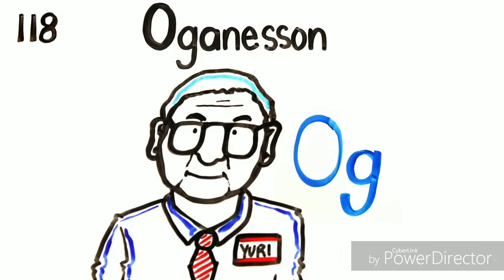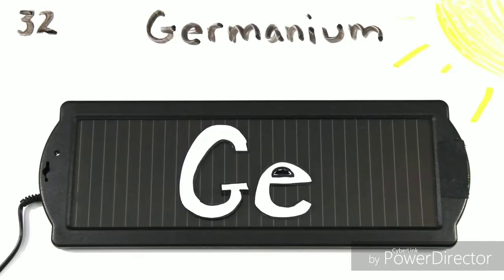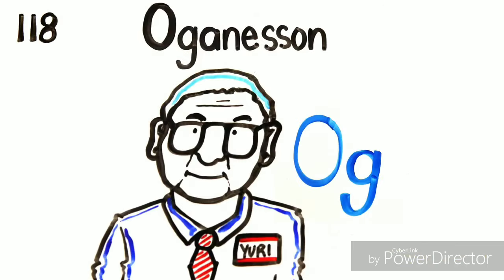Iron is the 26th, then Cobalt, Nickel coins you get, Copper, Zinc and Gallium, Germanium, and Arsenic, Selenium, and Bromine film.